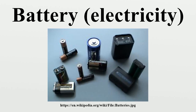A reserve battery can be stored unassembled for a long period. When the battery is needed, it is assembled, and once assembled, the battery is charged and ready to work. For example, a battery for an electronic artillery fuse might be activated by the impact of firing a gun.